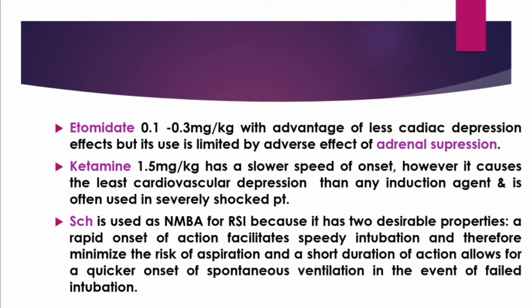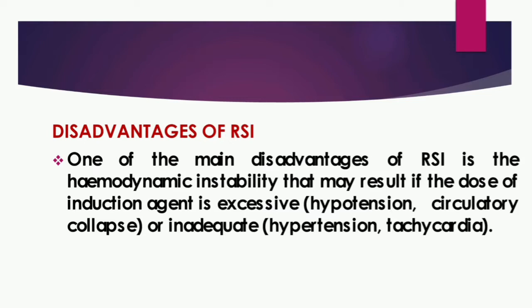Succinylcholine is used as the neuromuscular blocking agent for rapid sequence induction because it has two desirable properties: a rapid onset of action facilitates speedy intubation and therefore minimizes the risk of aspiration, and a short duration of action allows for quicker return of spontaneous ventilation in the event of failed intubation. Disadvantages of rapid sequence induction include hemodynamic instability — hypertension or circulatory collapse if the dose of induction agent is excessive, or hypertension and tachycardia if the dose is inadequate.